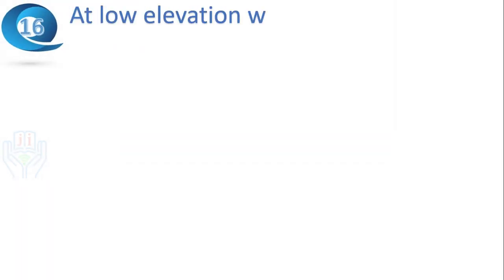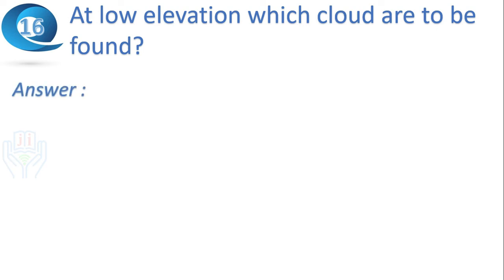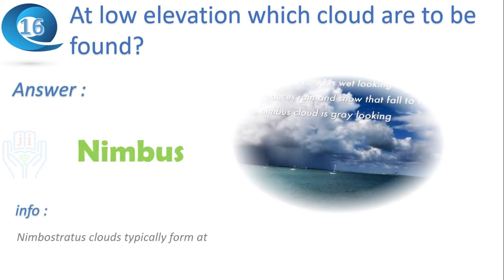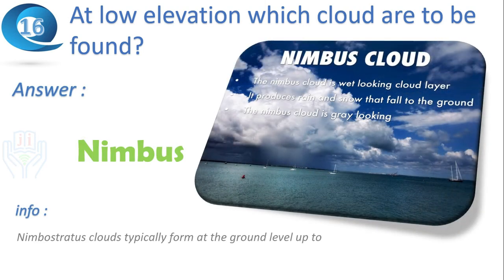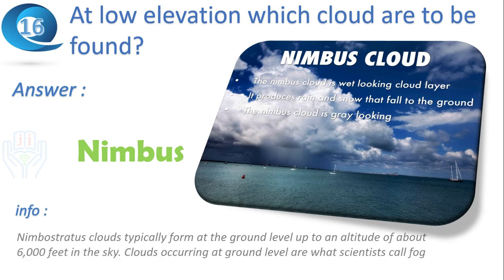Next question: at low elevation, which clouds are to be found? Answer: nimbus. Nimbostratus clouds typically form from ground level up to an altitude of about 6,000 feet in the sky. Clouds occurring at ground level are what scientists call fog.